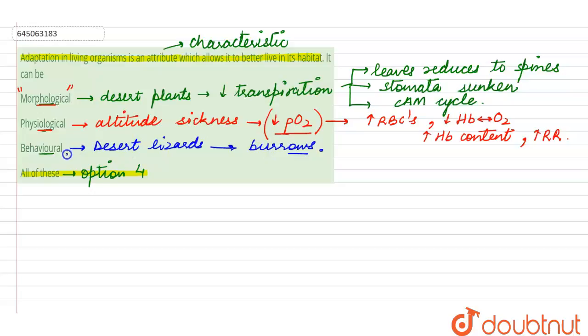So this is to save themselves from the extreme environmental conditions. So this is a type of a behavioral adaptation. So here we see that option number four is the right answer for this question because adaptation can be any of the three types.